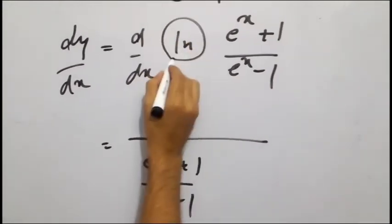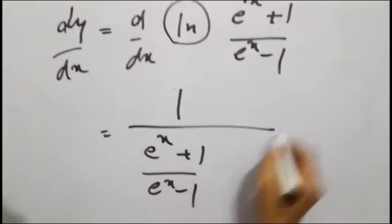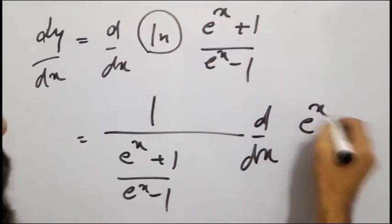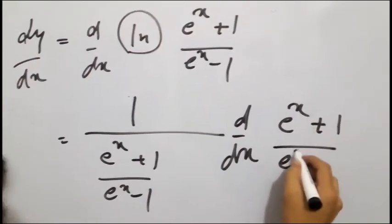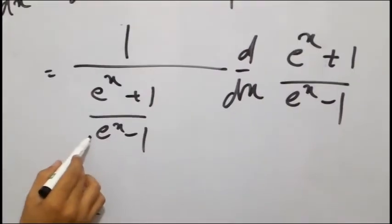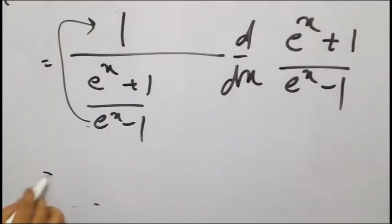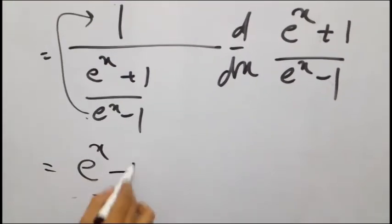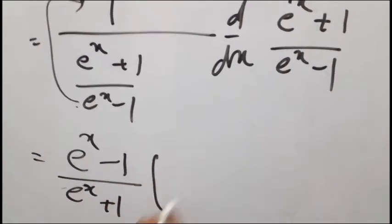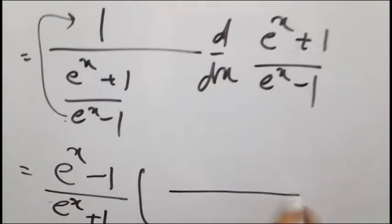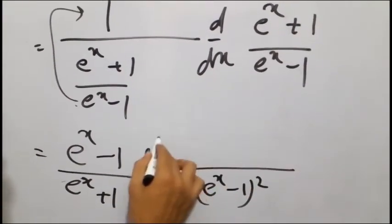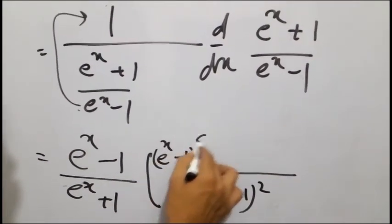हम natural log लिख रहे हैं। अब दुबारा से (e^x + 1)/(e^x - 1) का derivative लेंगे। यह बटे के नीचे बटा आ गया है, तो इसको उल्टा करके 1 के साथ ले जाएंगे: (e^x - 1)/(e^x + 1)। इस पर quotient rule apply करेंगे — (e^x - 1) का square नीचे आएगा, (e^x - 1) bracket में, और ऊपर वाली value का derivative find करना है।